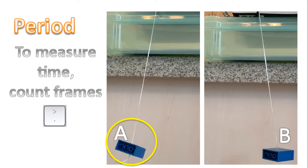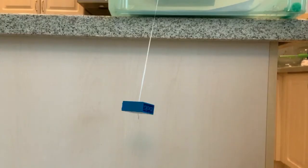So how do we count frames? Assuming you're watching this video on YouTube with the video paused at position A at an extreme point of the pendulum motion. On a computer, you can do the following. You can press the period key to move the video one frame forward at a time. Or you can press the comma key to move the video one frame backward at a time.